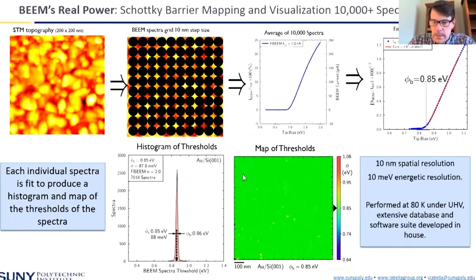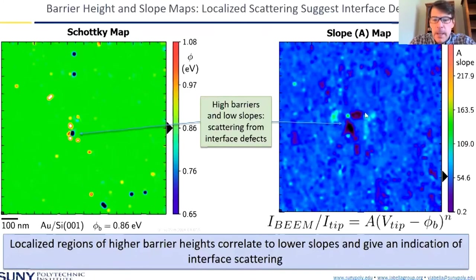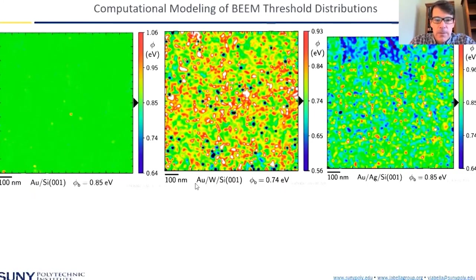You can also see defects — some localized high or low spots where the barrier might be higher, due to localized defects at the interface, in the metal, or in the semiconductor causing some type of scattering event. You can also look at the slope, which is this A factor, and this can correlate to different changes in barrier height. Here's gold on silicon — nice and uniform. Here's an interesting one where we did a partially reacted tungsten silicide with a gold cap showing a lot of variation. Here's a mixed metal-semiconductor system — gold and silver — which are completely miscible, and their Schottky barriers are about 200 meV apart, so we can resolve those differences.